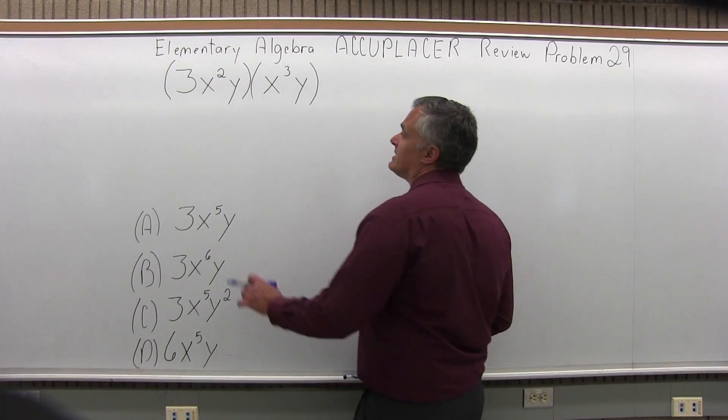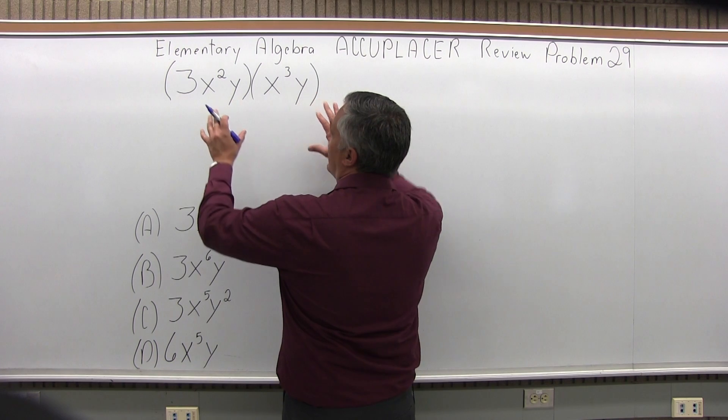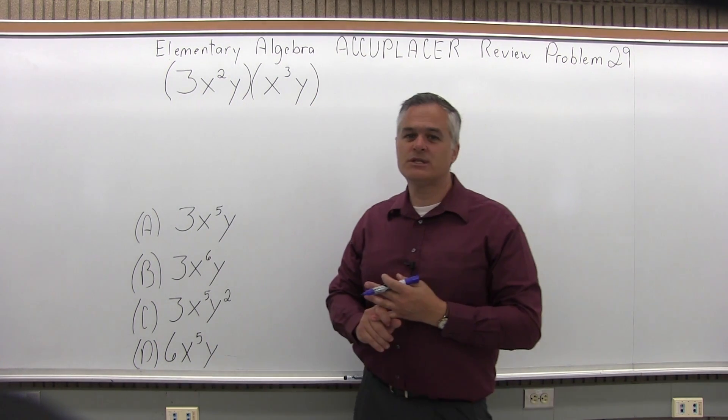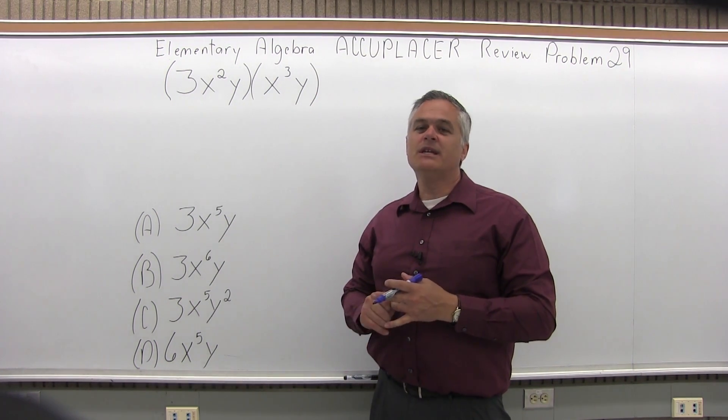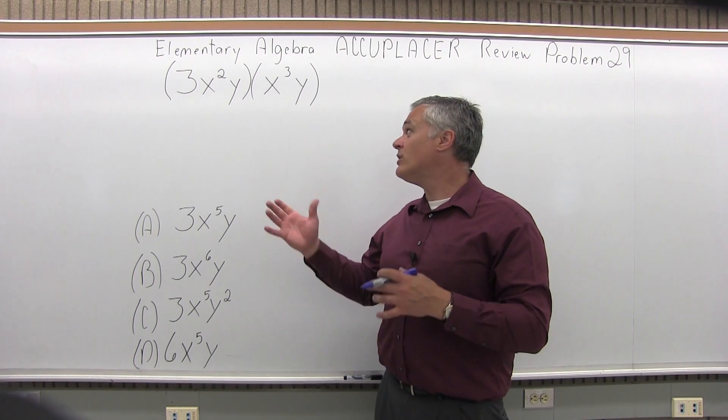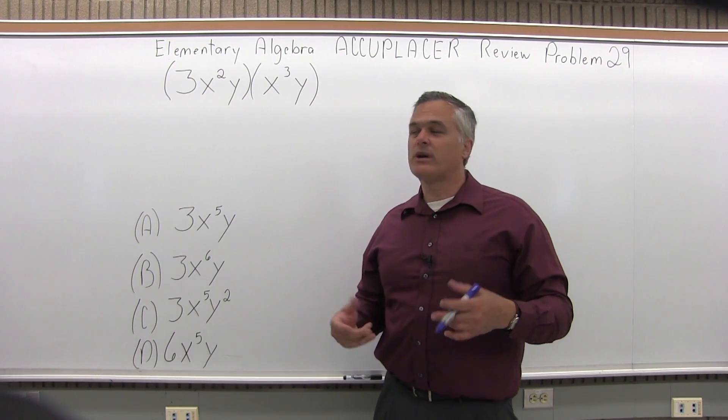When you have a problem like this, I think of it as a few little problems. You're going to multiply the numbers, get an answer for the numbers, and then each type of variable you do one at a time.